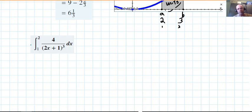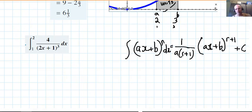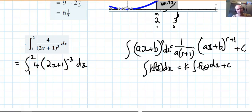Moving on to a slightly more difficult one, we have the integral of 4 over 2x plus 1 cubed dx between 1 and 2.